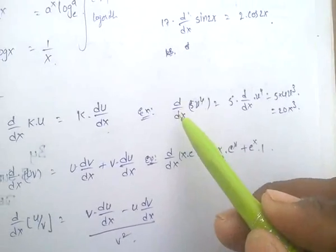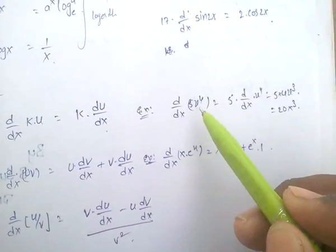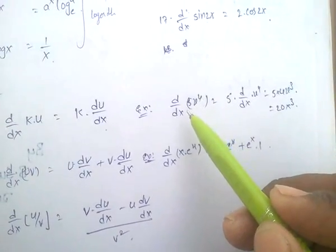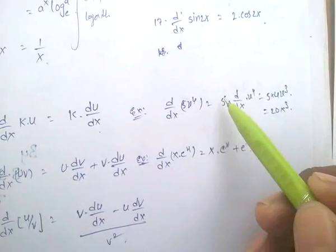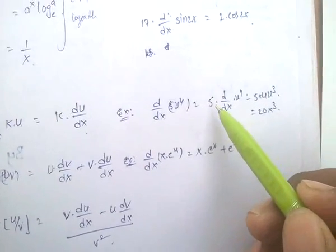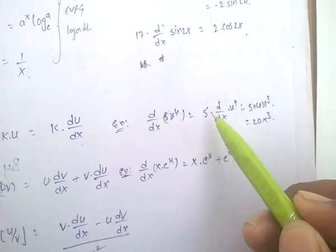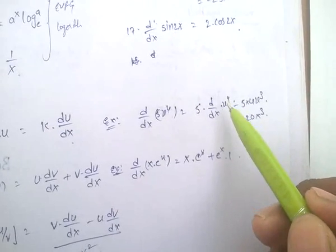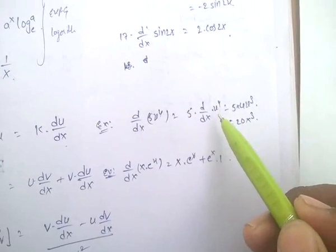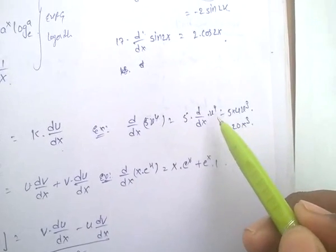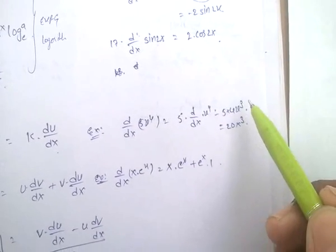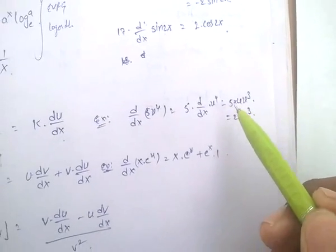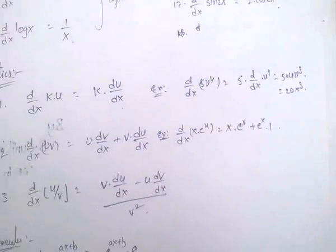For example, d/dx of 5·x⁴: 5 is a constant, so keep it as a factor. 5 into d/dx of x⁴, and x⁴ differentiates to 4x³, so the answer is 5 into 4x³.